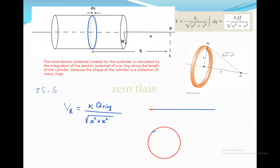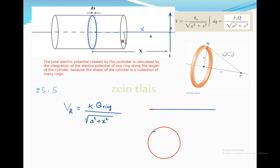The potential of a ring equals k times Q of the ring divided by the square root of a squared plus x squared, where x is the distance from the ring to point P along the x-axis. This ring potential is a small element of the total cylinder potential, and Q of the ring is a small portion of the total charge Q of the cylinder.